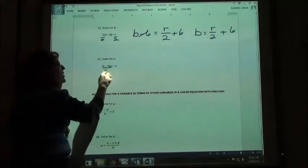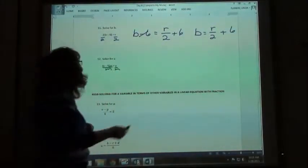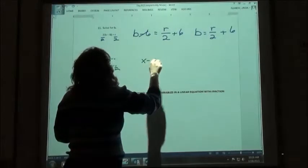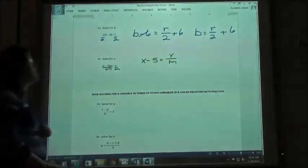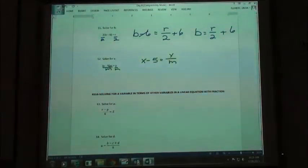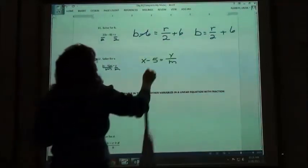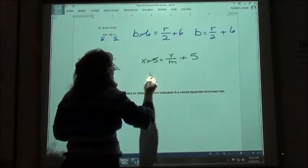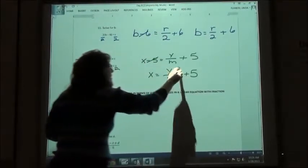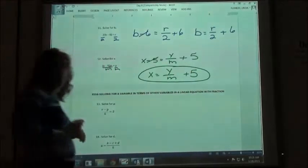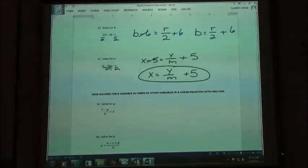These guys got really quiet. You came in and they don't have to talk anymore. x minus 5 then equals y over m. So if I'm going to solve that for x, I'm going to add the 5. x equals y over m plus 5 then for my answer. And the last three.